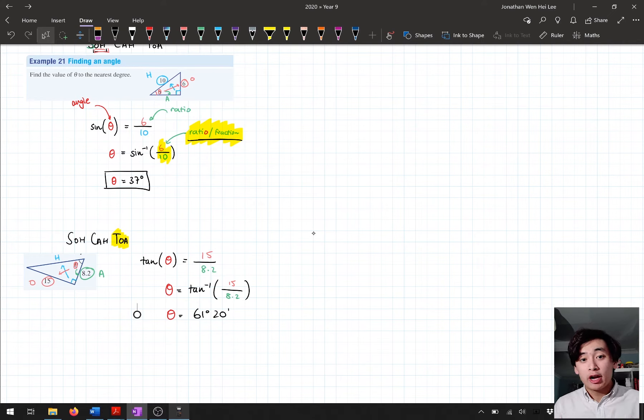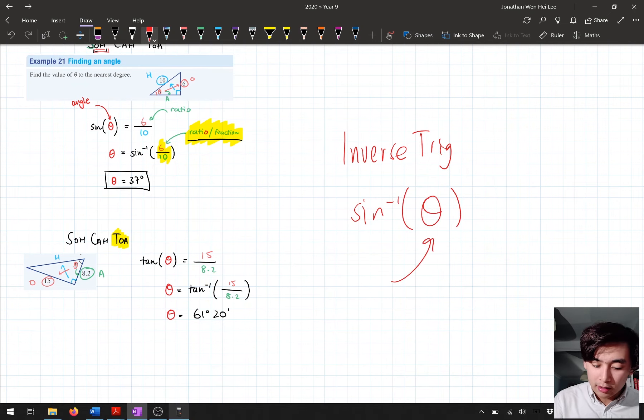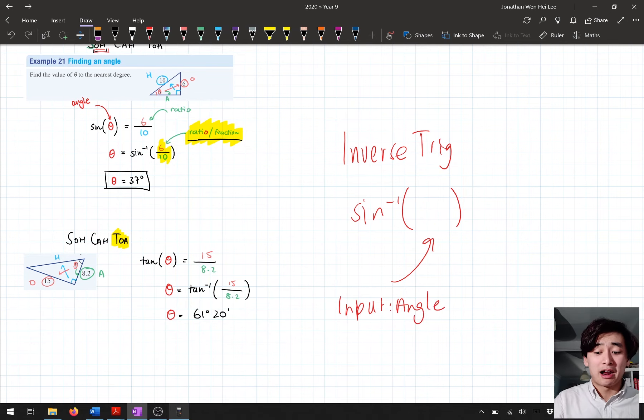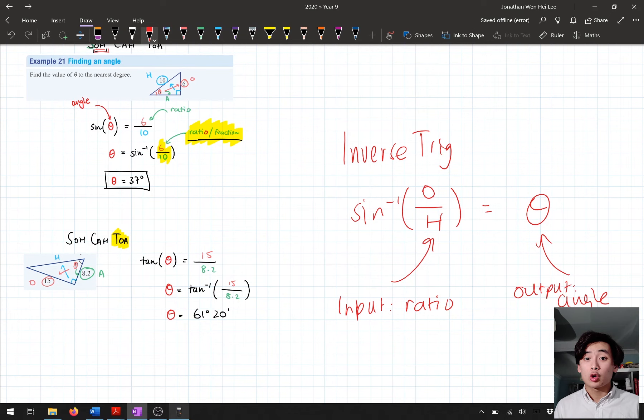But instead of using regular trig, we've been using inverse trig. So inverse trig, what do we need to do? We take, we put in an angle. So our input is an angle, and it, oh, wait around. I made a mistake. Input is a ratio, so opposite over hypotenuse, and we get out the angle. The output is the angle. So make sure you're very clear which type of trig you're using. Are you trying to find a missing side or missing angle? If you're trying to find a missing angle, we need to use inverse trig.